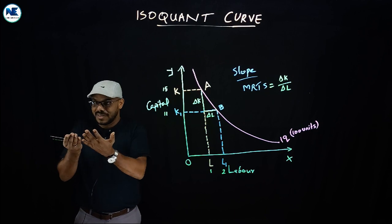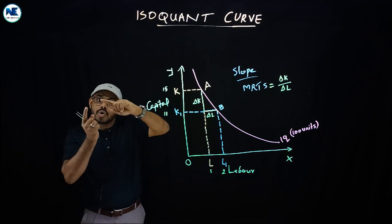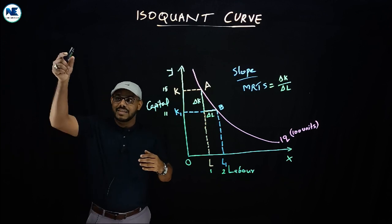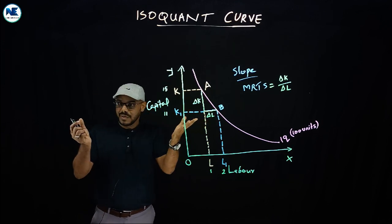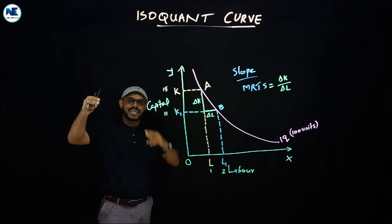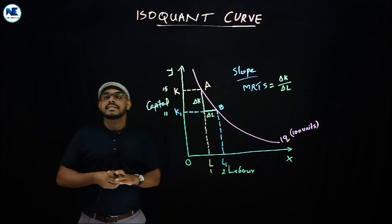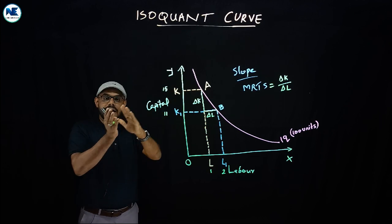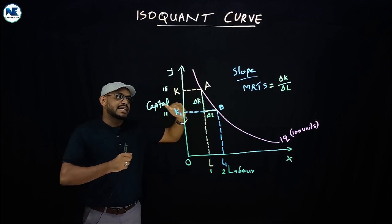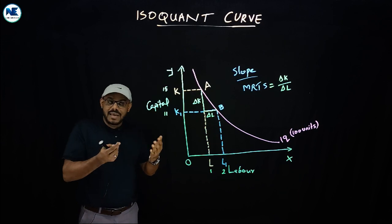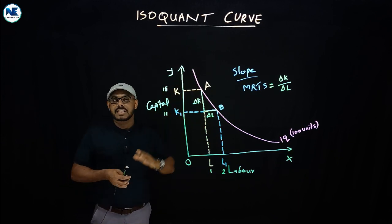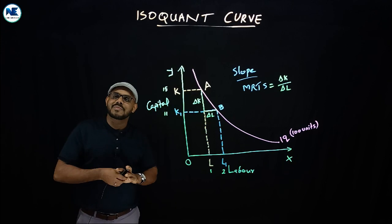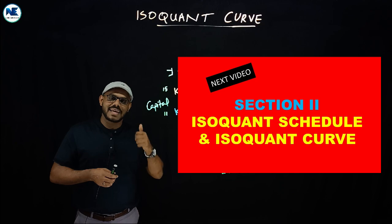Next we need to understand how to construct an isoquant schedule and how to convert that schedule into an isoquant curve — which is also a very important five-mark topic. In the coming sections, we will discuss: isoquant schedule and isoquant curve, then the isoquant map, and then the marginal rate of technical substitution. See you in the coming video. Have a nice day, happy learning!